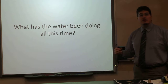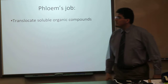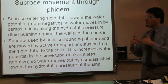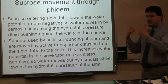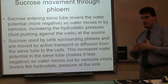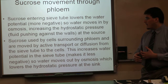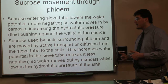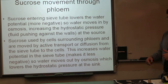Now, what has water been doing all this time? The phloem's job is to translocate soluble organic compounds. Sucrose enters the sieve tube, which lowers the water potential — makes it more negative — so water moves into the phloem by osmosis. That increases hydrostatic pressure at the source. Sucrose is then used by cells surrounding the phloem and moved by active transport or diffusion from the sieve tube into the cells. That increases the water potential in the sieve tube, making it less negative, so water moves out by osmosis, which lowers hydrostatic pressure at the sink.